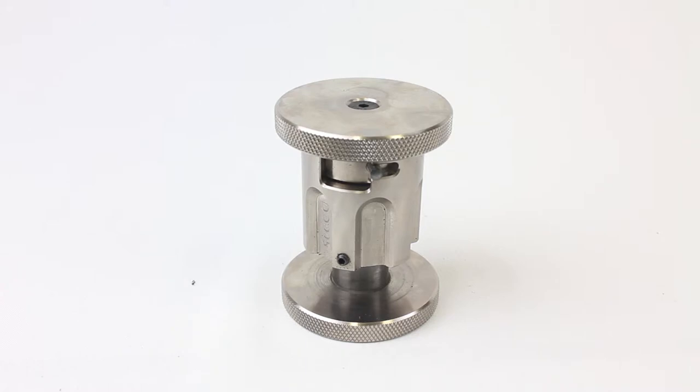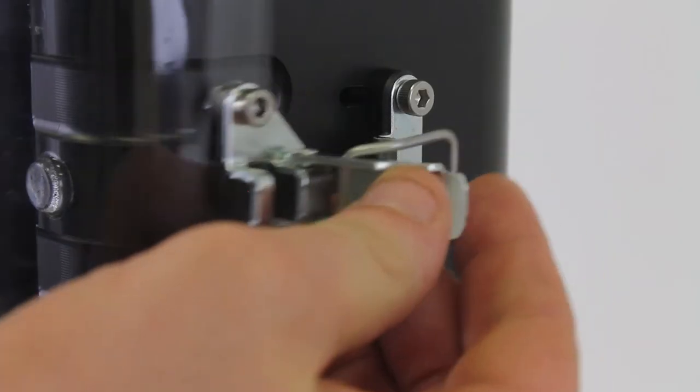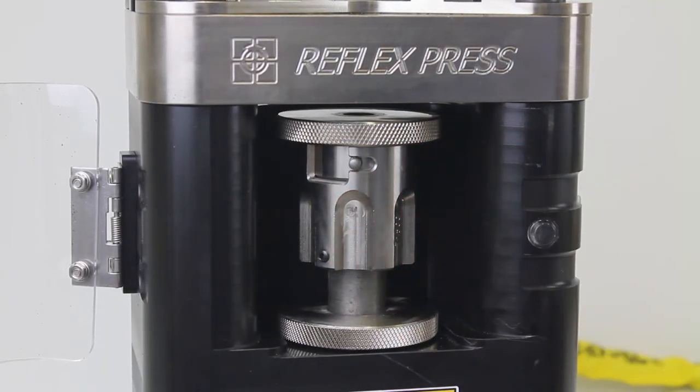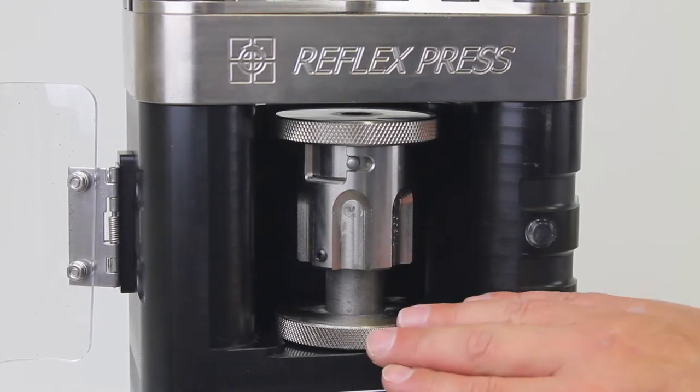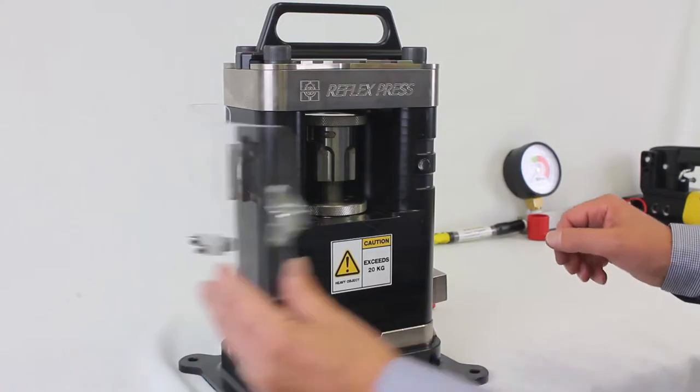The sample is now ready to be pressed. The press uses hydraulic pressure to press the sample and operates at high pressures. When pressurized, do not touch any hoses or fittings. Unlatch the door to the press and place the sample die into the press. Insert the die fully utilizing the provided guides. Close and latch the door.